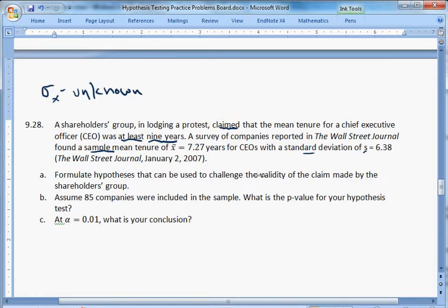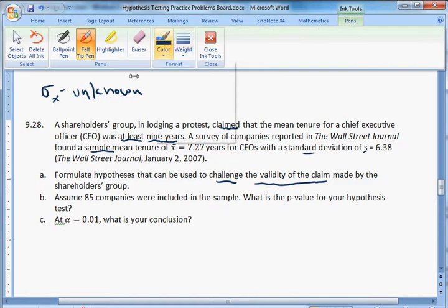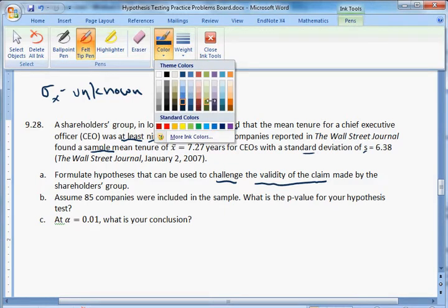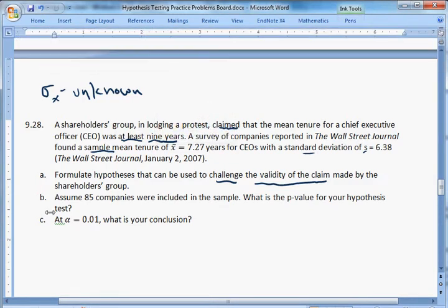Part A, formulate hypotheses that can be used to challenge the validity of the claim made by the shareholders group. If we want to challenge the validity of the claim, we want to prove them wrong, then we need to put their claim in the null. We've got to give them the benefit of the doubt so we can prove that it's false.